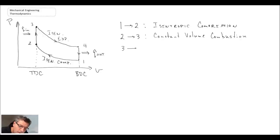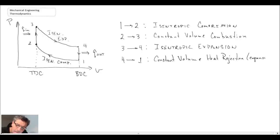Three to four is our power stroke, and that is isentropic expansion. Four to one we will model as a heat rejection, and we will call that constant volume heat rejection, and that really is expansion. So those are the four components that we have within our Otto cycle.